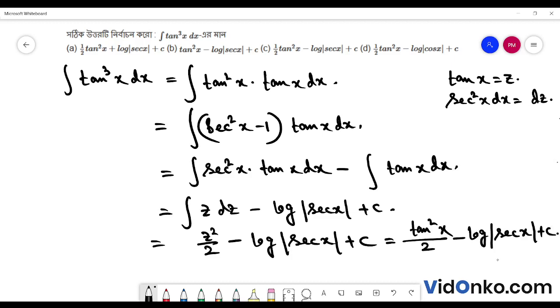So let's see where the answer is. Here is option c: tan squared x by 2 minus log of sec x plus c. This is the answer.